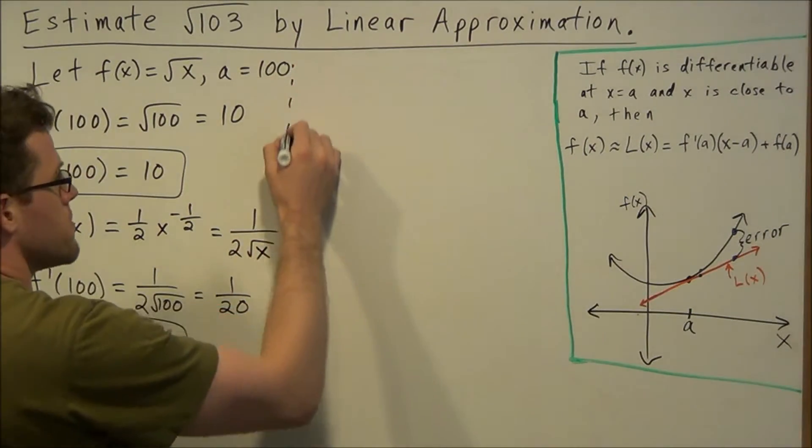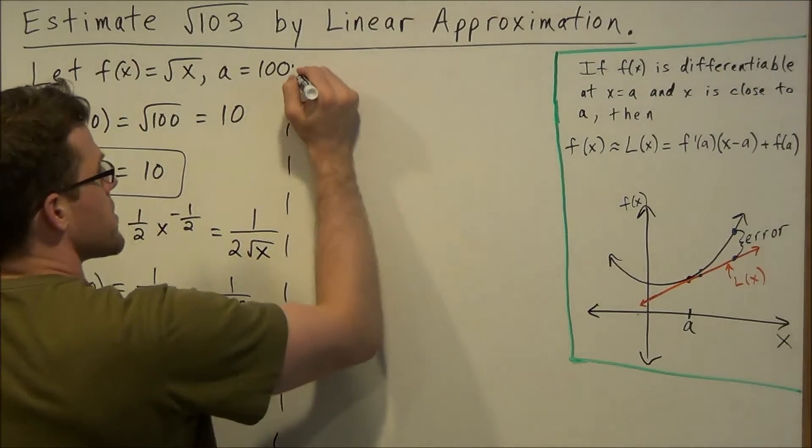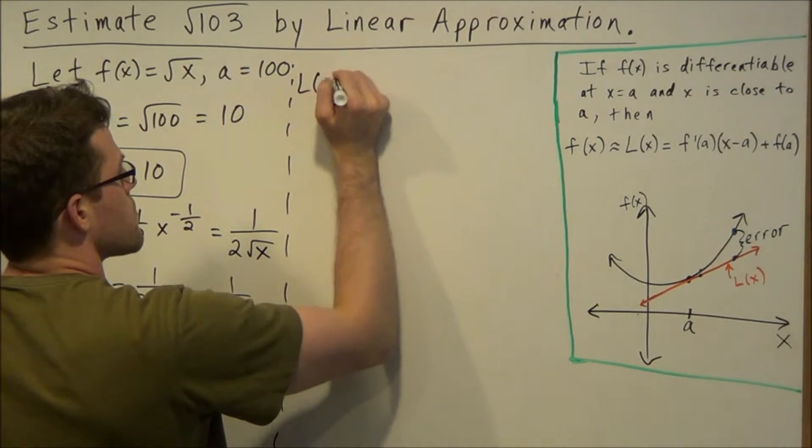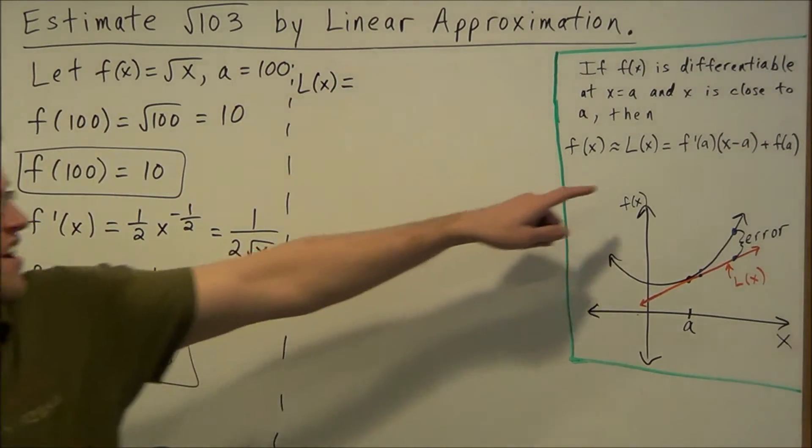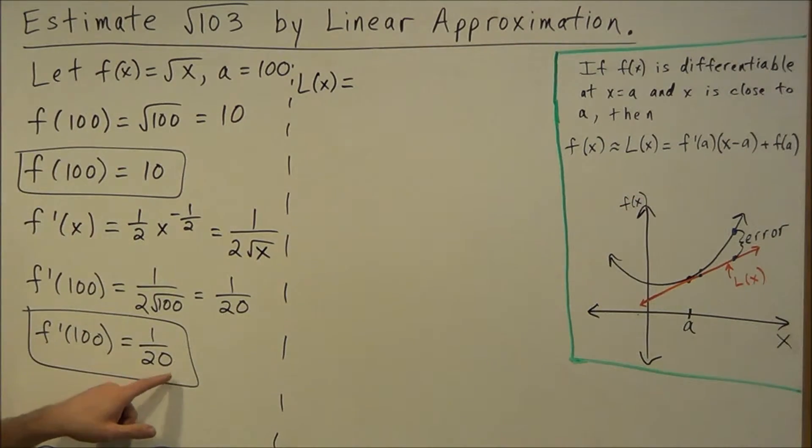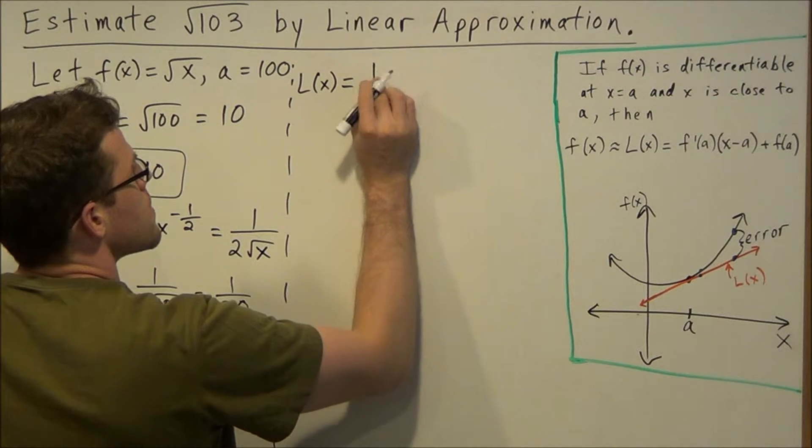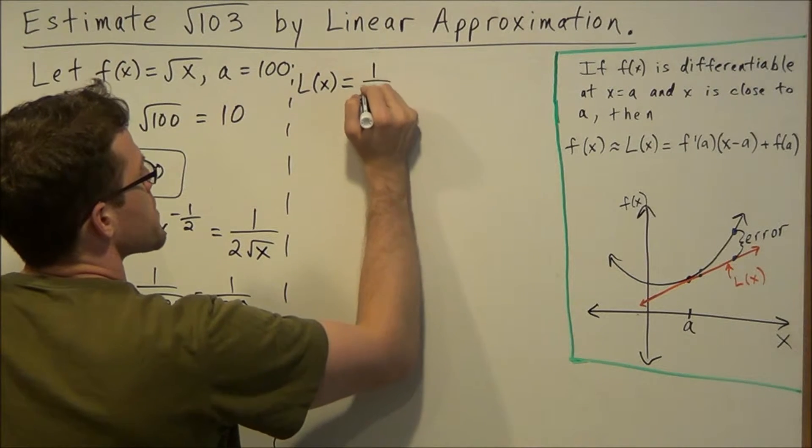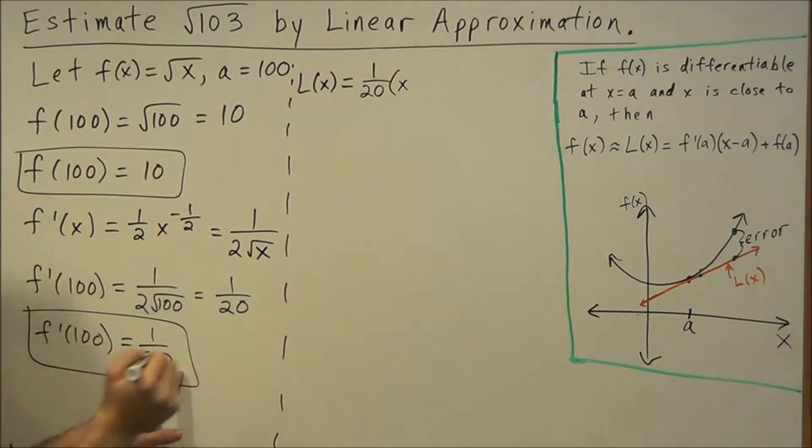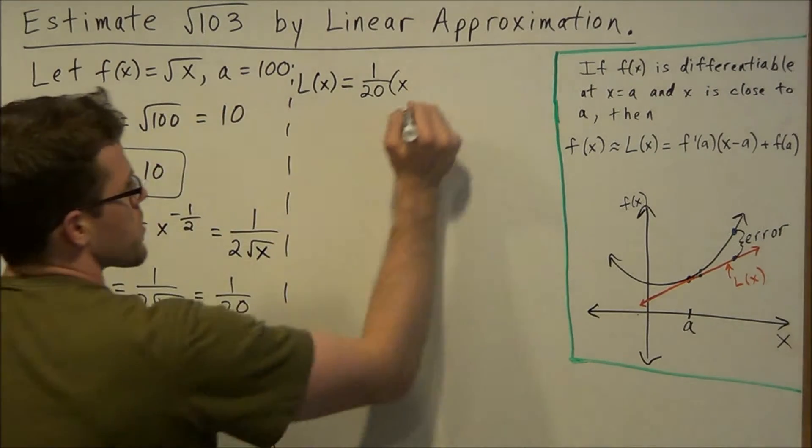So for the next part, we're just writing the equation of a tangent line. We have L(x) equals, and we have f prime of a, which represents our slope, which in this case is 1 over 20. So we have 1 over 20 times x minus a, and our a value here is 100.